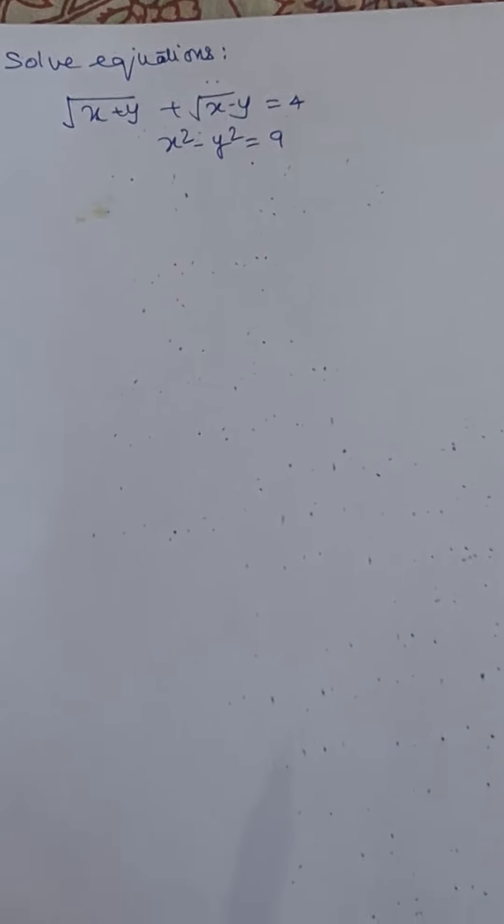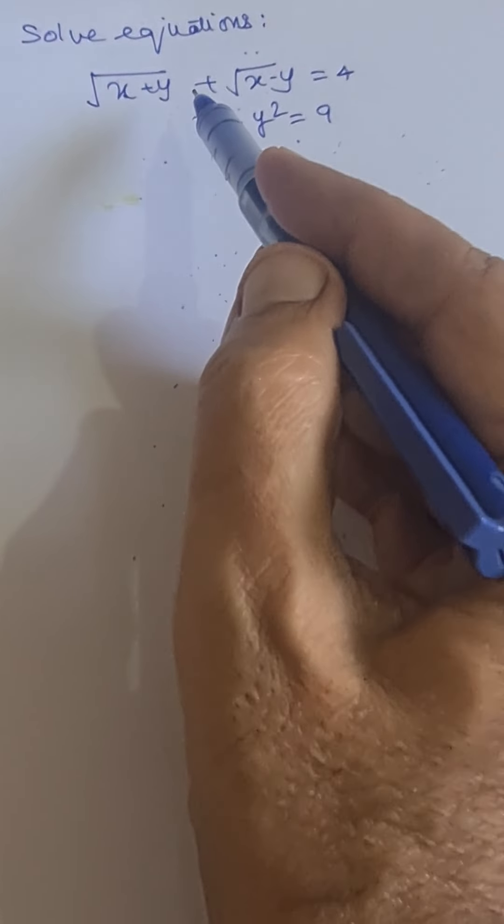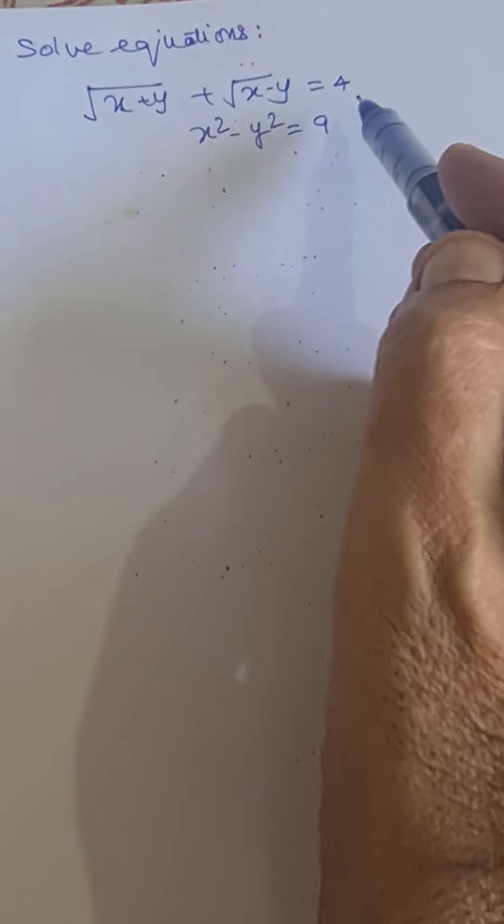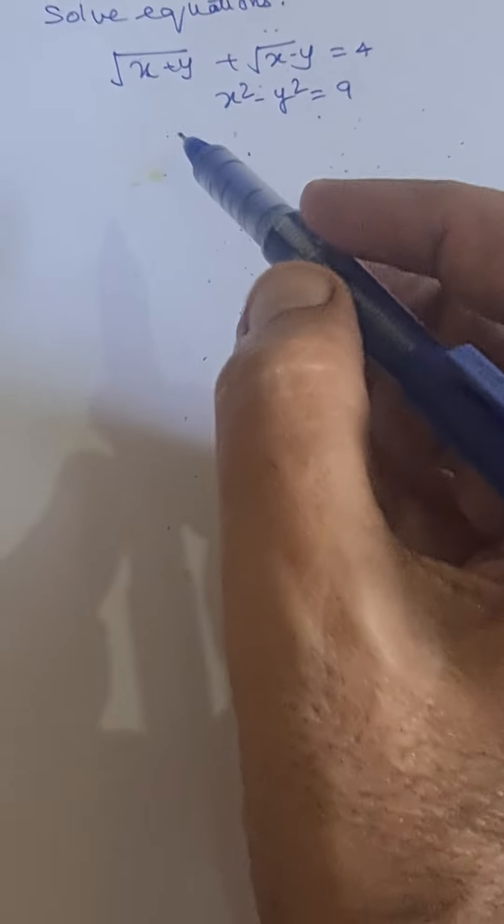Dear friends, welcome to my channel. In this video we'll solve equations: root x plus y plus root x minus y equal to 4, and x square minus y square equal to 9. For solving this equation we will square the first equation.